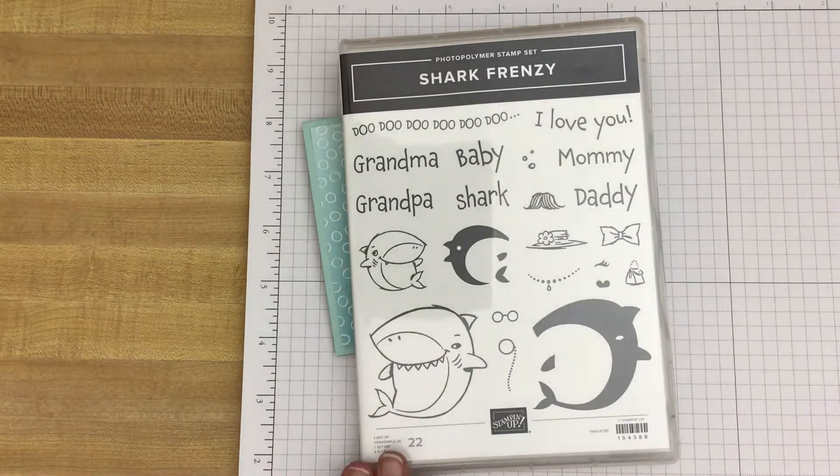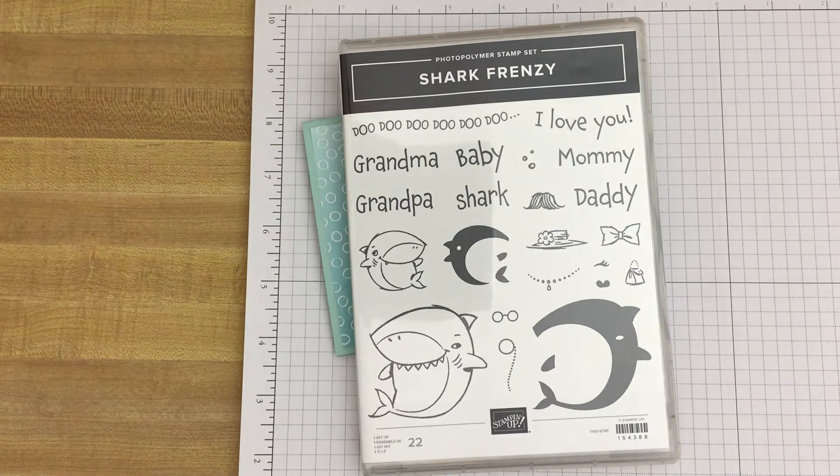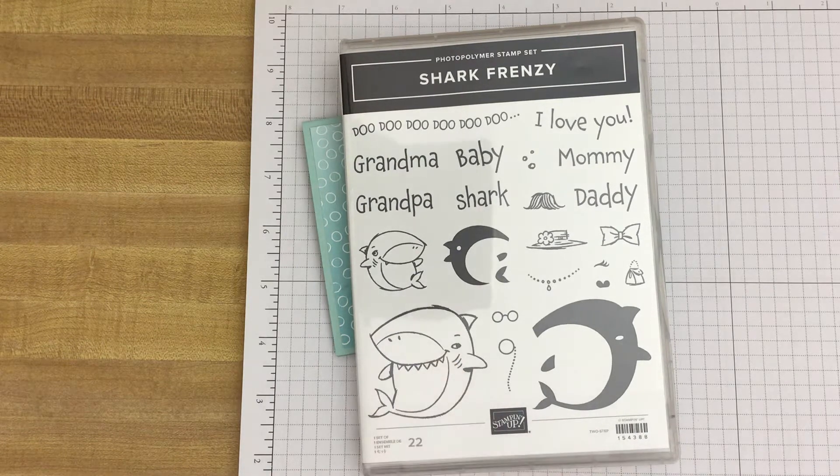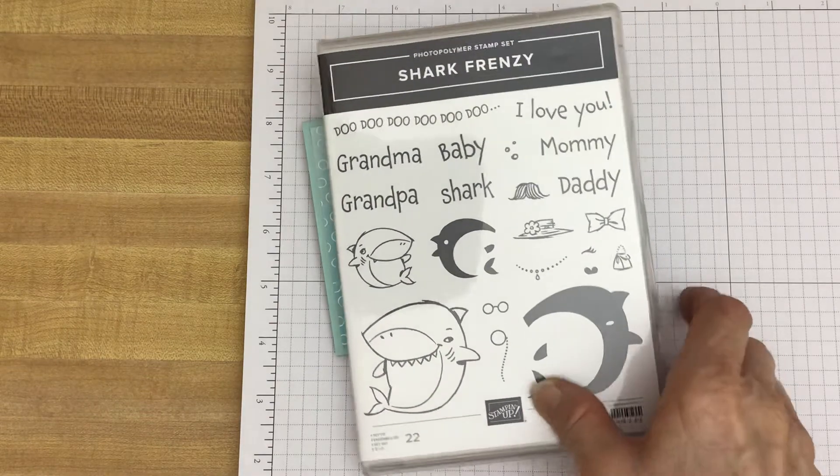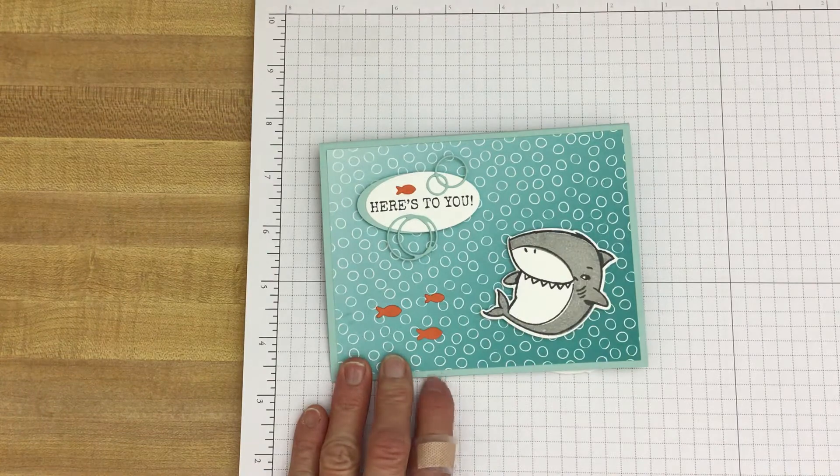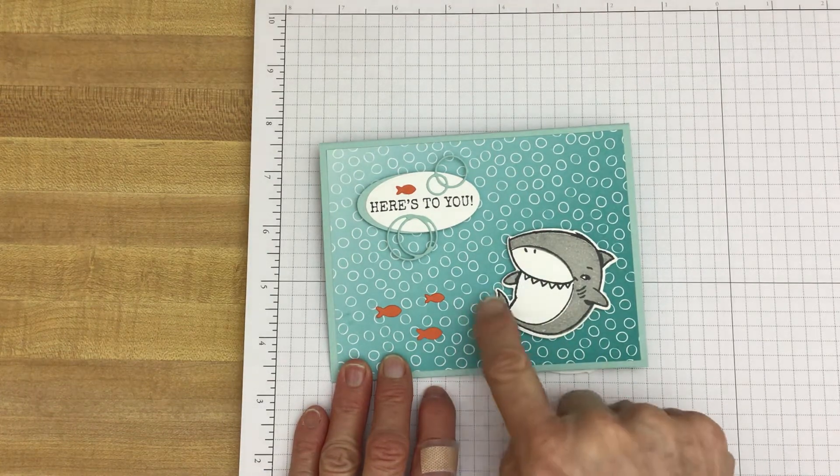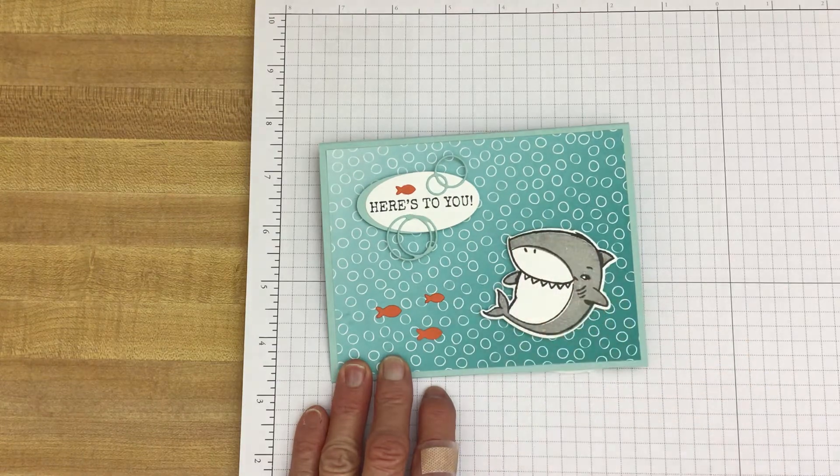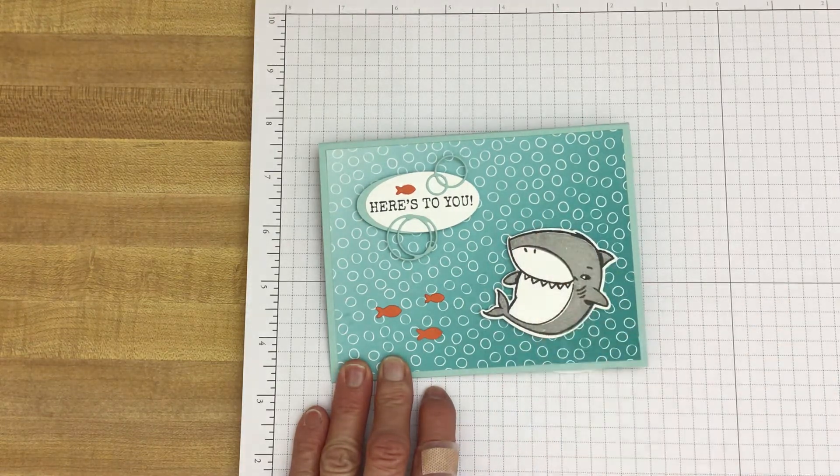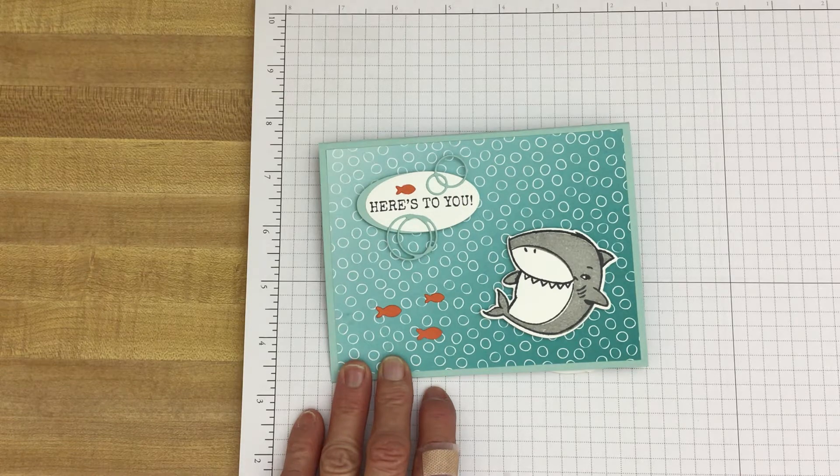But this stamp set is a two-step stamping set. That means there's the outline image and then there's the filler image. As you can see I stamped the outline of the shark using the memento tuxedo black. And then I stamped the filling, filled in the color using the other stamp and smoky slate.